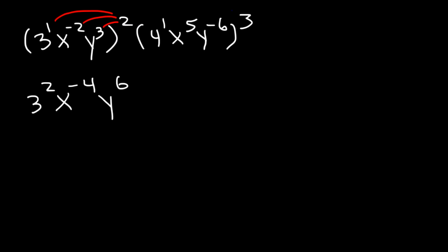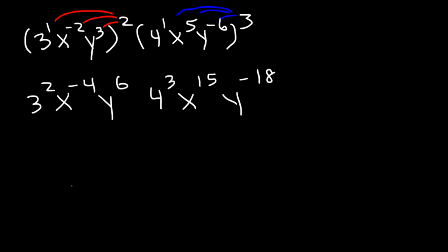Now let's do the same for the other group — distribute the 3 to every exponent inside the parentheses. 1 times 3 is 3, 5 times 3 is 15, negative 6 times 3 is negative 18. Now let's simplify: 3 squared is 9, and 4 to the 3rd is 64.